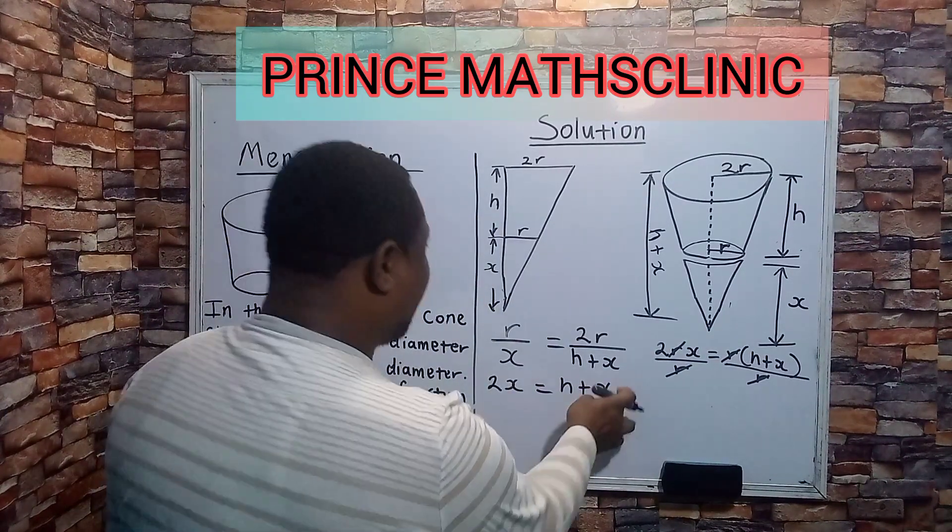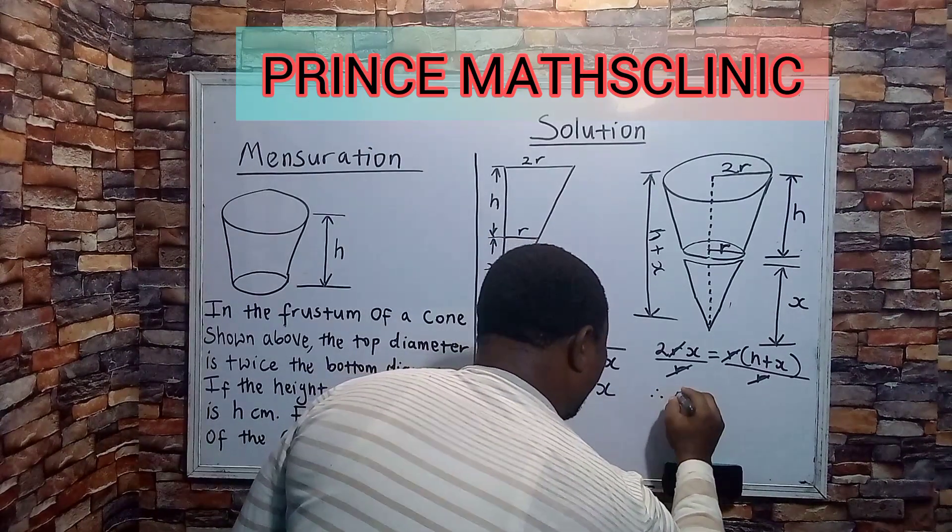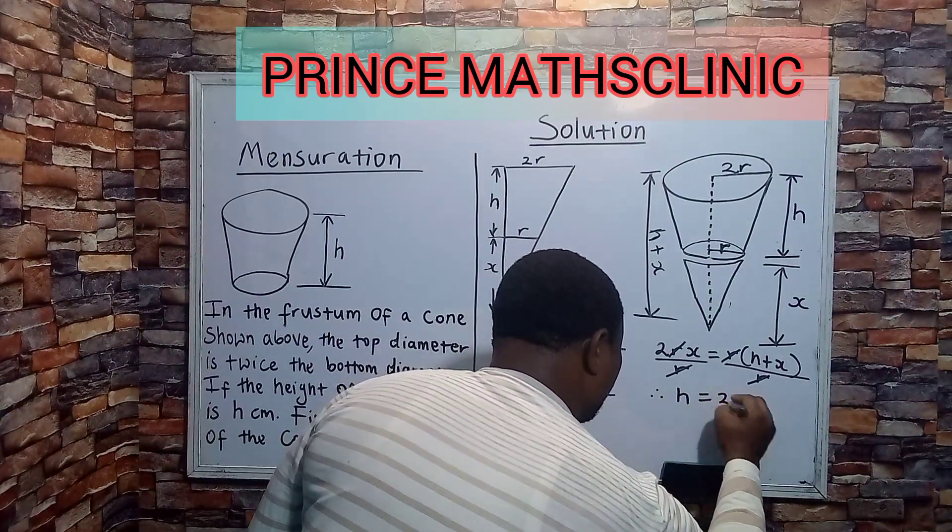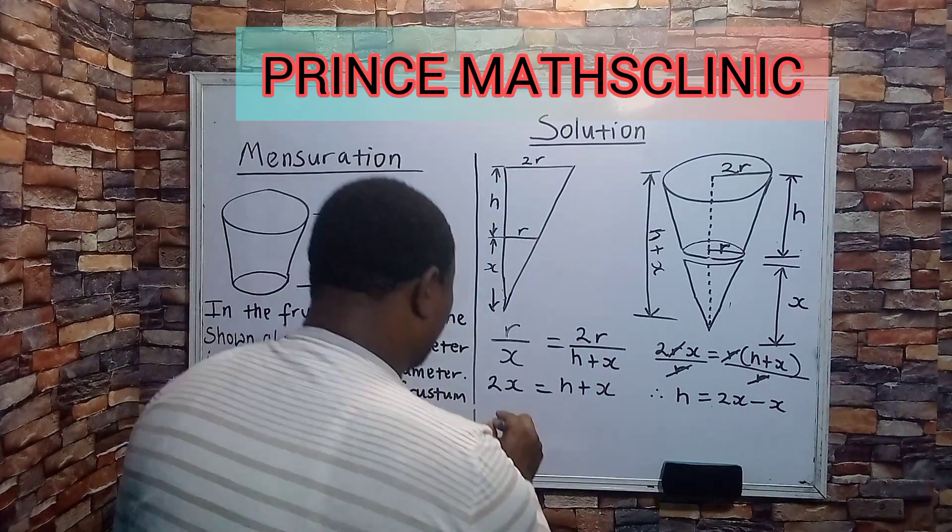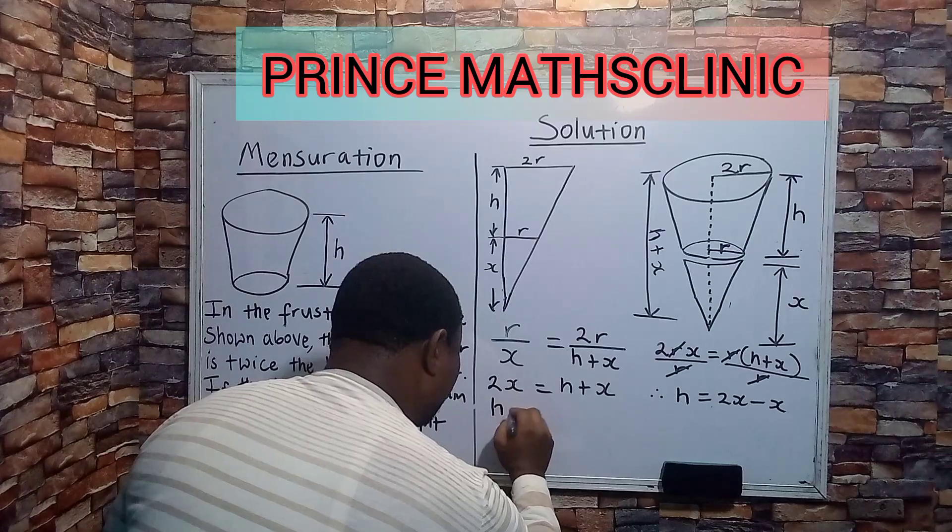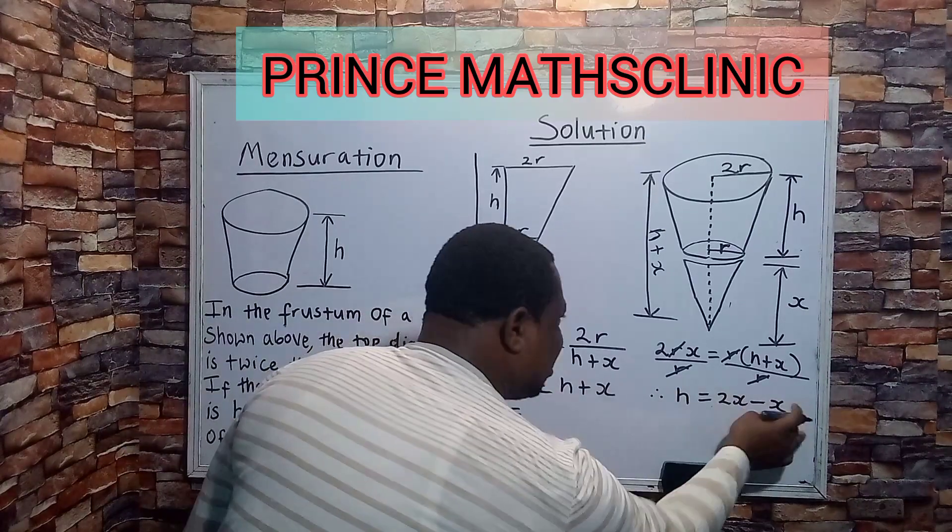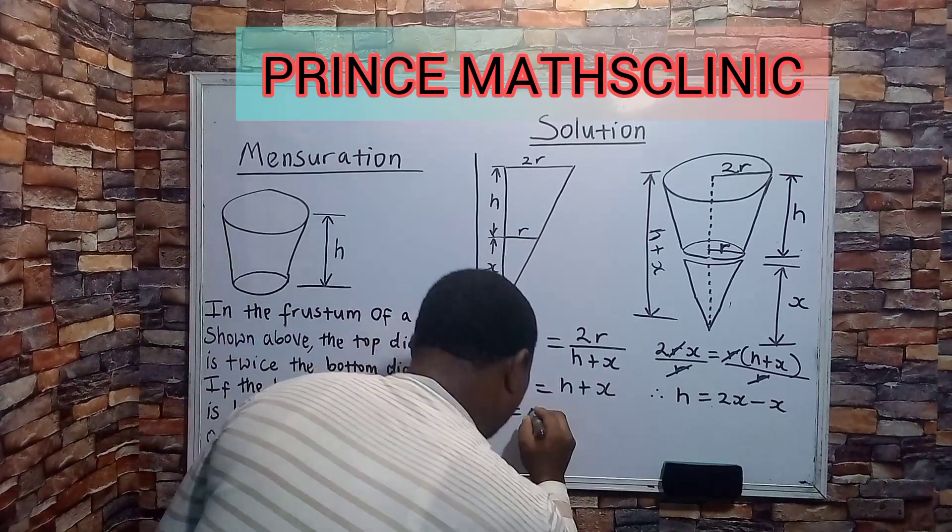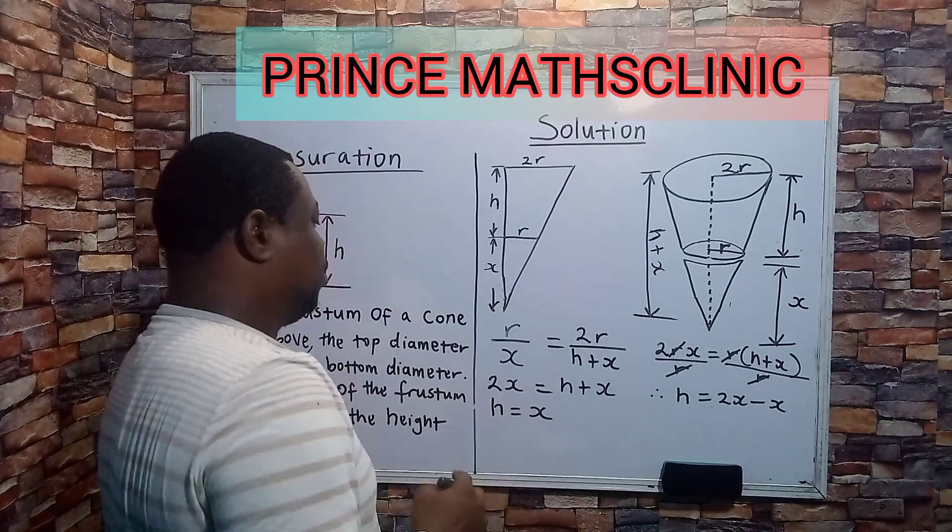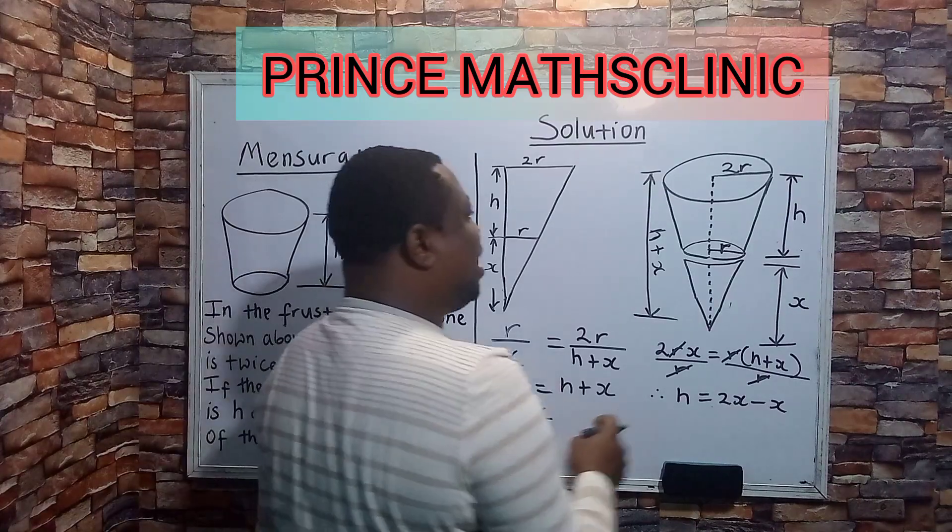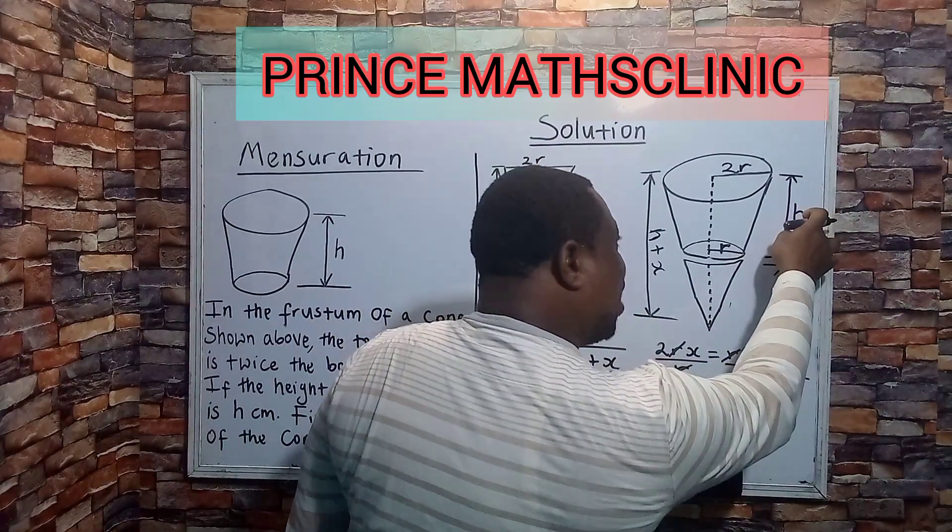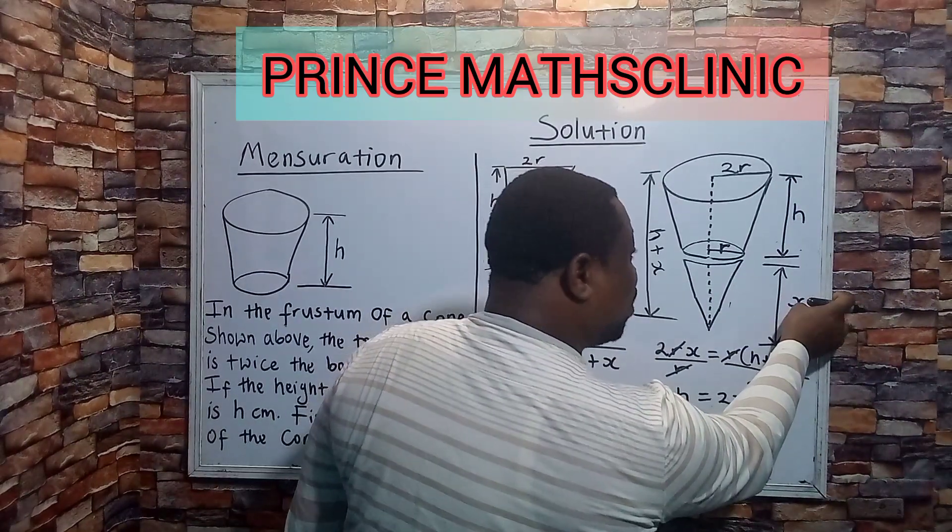So if I bring x to this side, it then means that therefore my h will be simply 2x minus x. So what does this mean? It then means that my h will now be what? 2x minus 1x will give us just x. So it then means that my h is equals to x. So that means that this h is equals to x, or you say this x is equals to h.